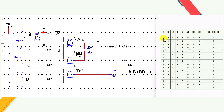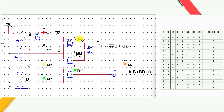Simulation: when all 4 inputs are 0, output is 0. When Ā changes to 1, output changes. Trying values 0,0,1,1: A=0, B=0, C=1, D=1 - switches C and D open. Ā=1, ĀB=0, BD=0. With A=0, B=0, C=1, D=1: Ā=1, ĀB=0, BD=0, CD=1, so the output is 1.